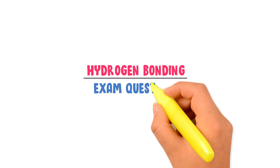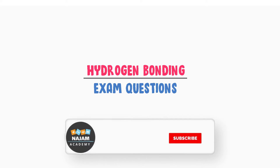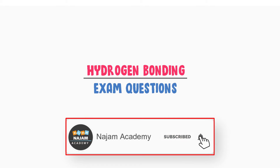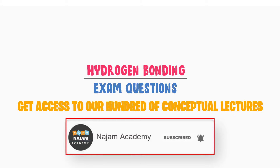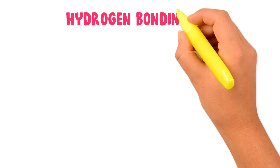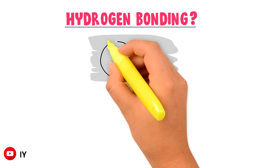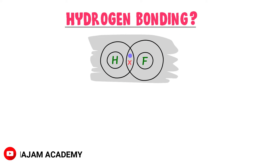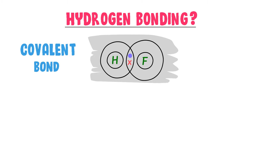Hydrogen bonding — at the end of this lecture I will teach you top exam-oriented questions. Consider a single molecule of hydrogen fluoride. We know that hydrogen and fluorine atoms are chemically combined due to a covalent bond; they mutually share one pair of electrons to form a single molecule of hydrogen fluoride.